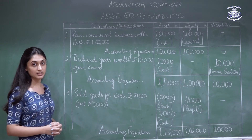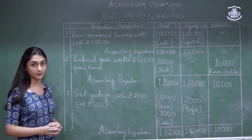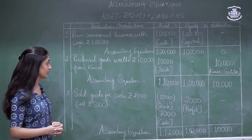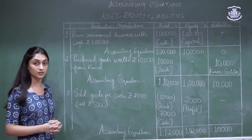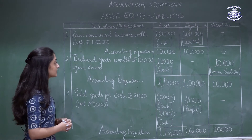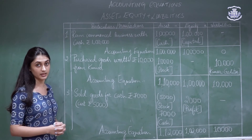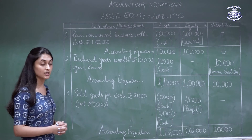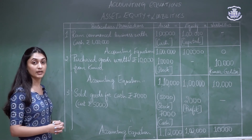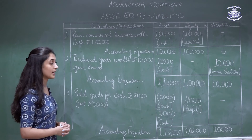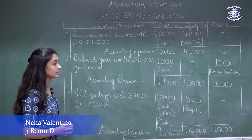The second transaction: purchased goods worth rupees 10,000 from Kumar. The two aspects are the goods purchased and Kumar's account, which is the creditors account. Since goods are purchased for 10,000, the stock level in the assets column increases by 10,000, and creditors increase by 10,000 in the liabilities column. The new accounting equation is: Assets 1,10,000 = Equity 1,00,000 + Liabilities 10,000.